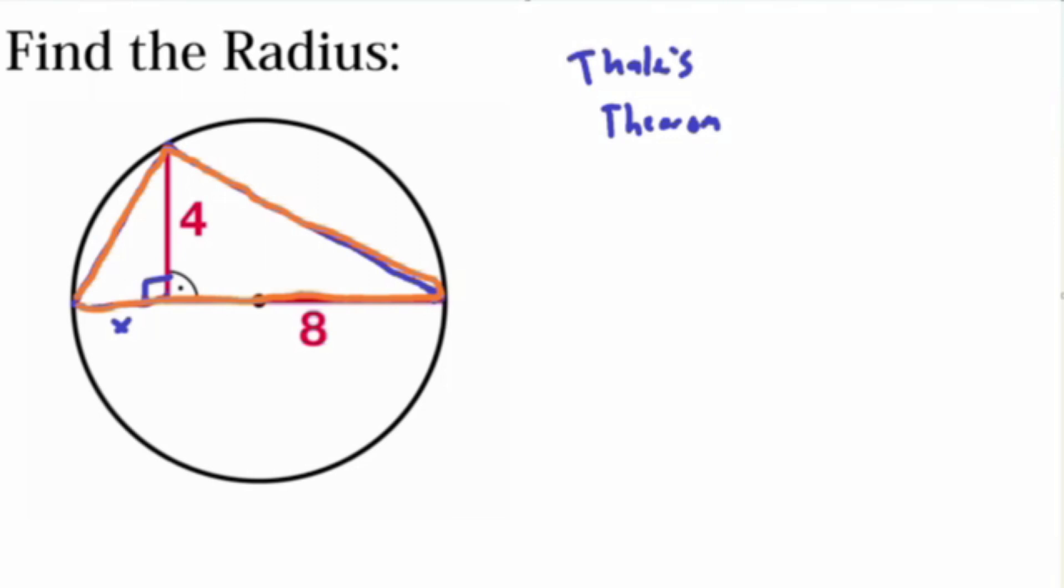And basically, what it states in a circle is that any... So we have the whole diameter written out here, right? And that means that if a triangle is inscribed in a circle with one of the sides being the diameter... So here we have a triangle with one of the sides being the diameter of the circle, right?